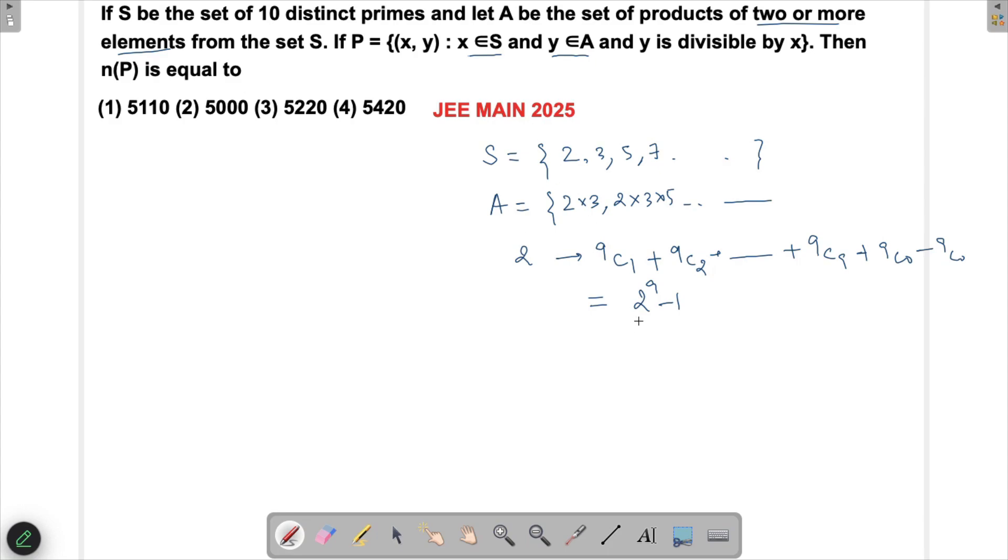When I choose any prime, all of them will be having 2^9 - 1 factors in a way. Now we focus on P because that is what we have to focus on.